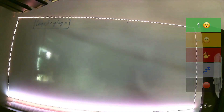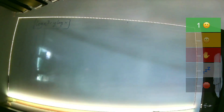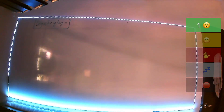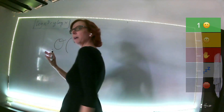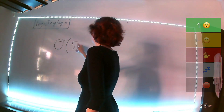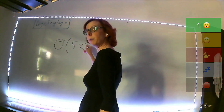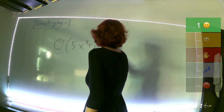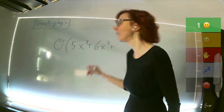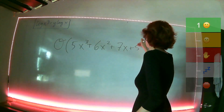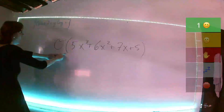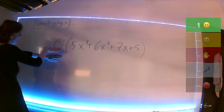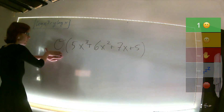Voy a copiar la función exacta que tengo en la primera pregunta. En mi primera pregunta me están pidiendo simplificar: hay una O mayúscula caligráfica, luego un 5 veces X al cúbico, luego un 6 veces X al cuadrado, luego un 7 veces X, y luego un 5. Esto significa: ¿cuál es la clase de crecimiento asintótico de peor caso de esta función?